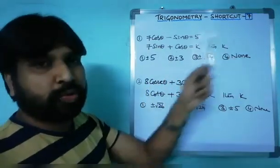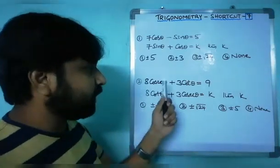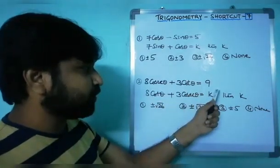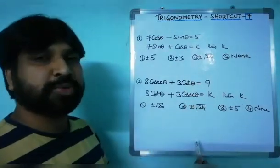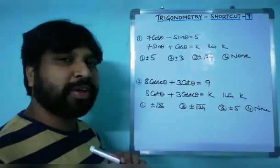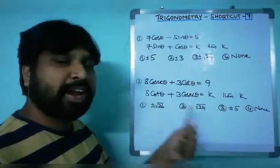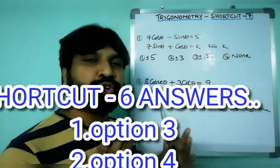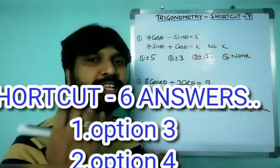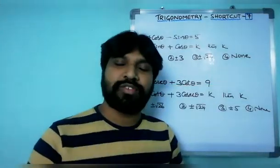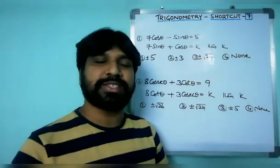Practice problems for you: (1) If 7 cos θ − sin θ = 5 and 7 sin θ + cos θ = k, find k. (2) If 8 cos θ + 3 cot θ = 9 and 8 cot θ + 3 cos θ = k, find k. Solve these and post your answers in the comment box — I'll reveal the answers in the next video. That's all for today's class. Hope you enjoyed it. Thank you very much!